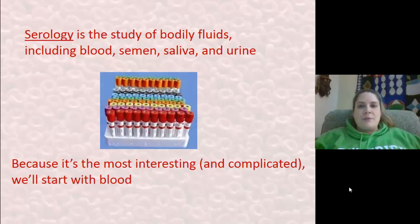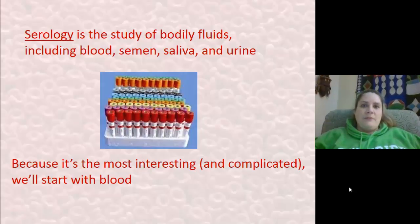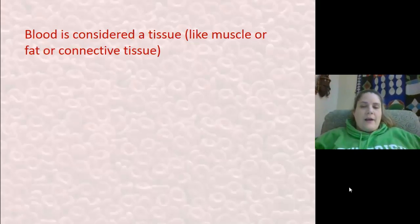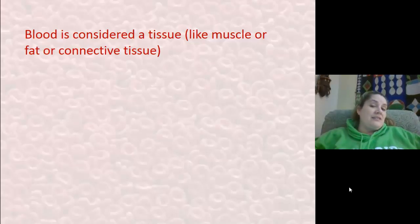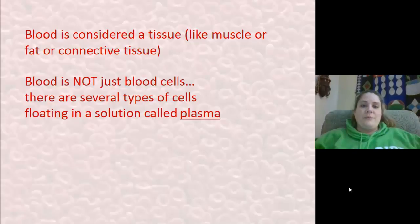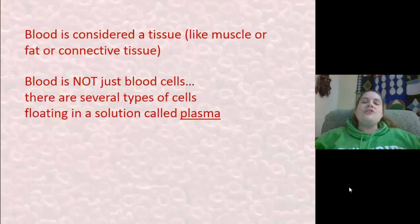Because it's the most interesting but also the most complicated, we're going to start with blood. For starters, blood is considered a tissue — it's just like muscle or fat or connective tissue or any other kind of tissue. It's kind of weird because most of the time we tend to think of body tissues as being solids, and we don't really think of them as being liquids. But even though blood is a liquid, it is still considered to be a tissue. One thing that's hard for students to remember is that blood is not just blood cells — we're actually talking about a whole solution of various different things.